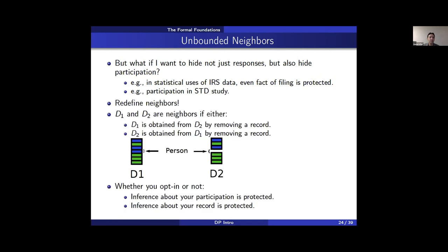To hide both participation and any response, we can change the definition of neighbors. Instead of databases being neighbors if they differ on the value of one record, we say two databases are neighbors if you can obtain one from the other by adding or removing a record — these are called unbounded neighbors. The difference between D1 and D2 is that D1 has an additional person, and based on the output of a differentially private mechanism, we won't be able to say with confidence whether the input was D1 or D2 — meaning we don't know whether this person's data was used.